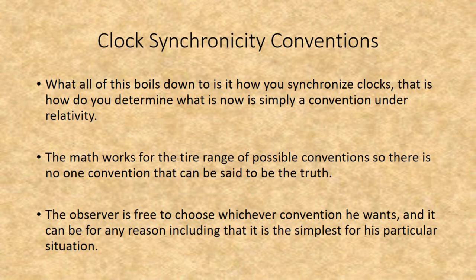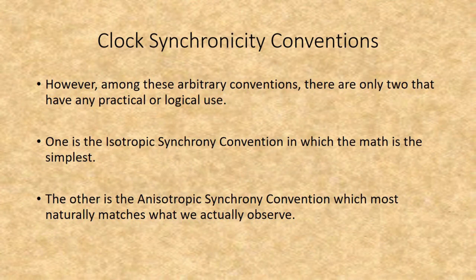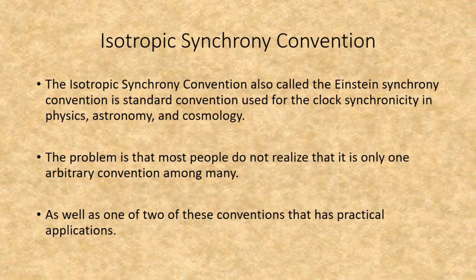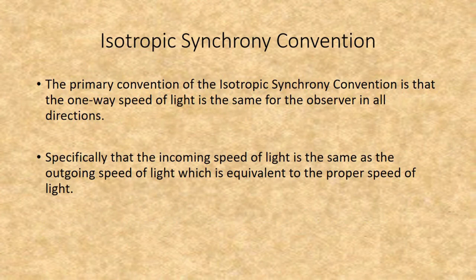The observer is free to choose whichever convention he wants, and it can be for any reason — including that it is the simplest for his particular situation. However, among these arbitrary conventions, there are only two that have any practical or logical use. One is the Isotropic Synchrony Convention, in which the math is the simplest. The other is the Anisotropic Synchrony Convention, which most naturally matches what we actually observe. The Isotropic Synchrony Convention, also called the Einstein Synchrony Convention, is the standard convention used in physics, astronomy, and cosmology, though most people do not realize it is just one arbitrary convention among many.